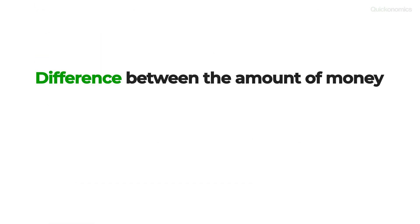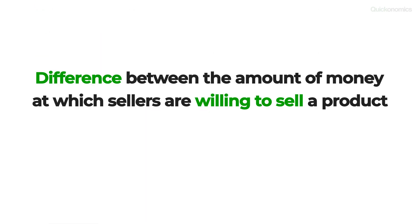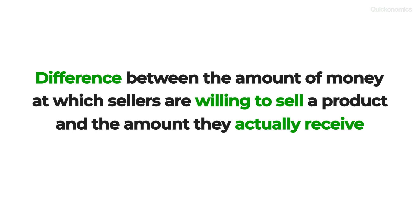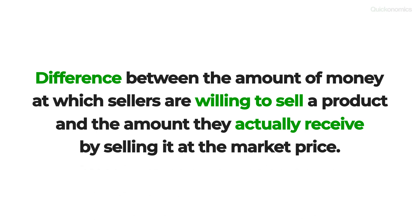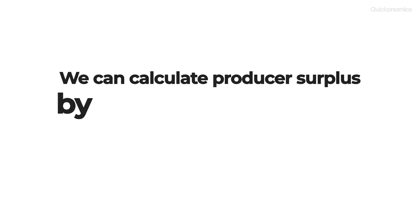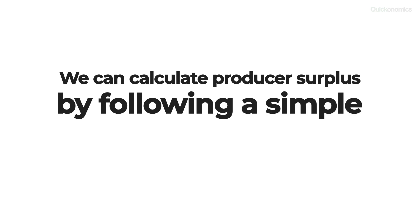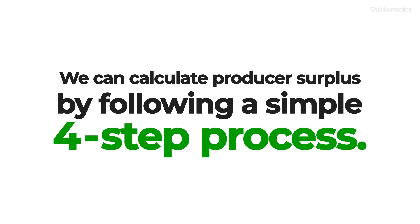Producer surplus describes the difference between the amount of money at which sellers are willing to sell a product and the amount they actually receive by selling it at the market price. We can calculate this producer surplus by following a simple four-step process.